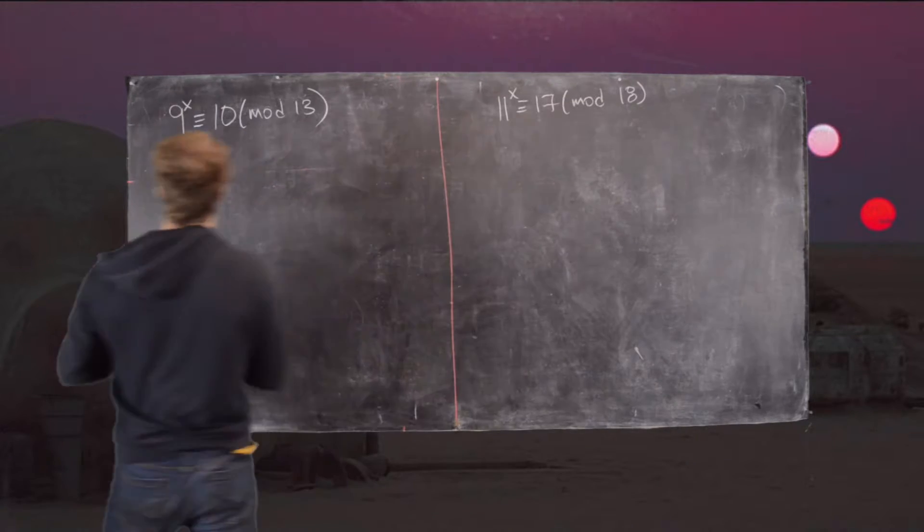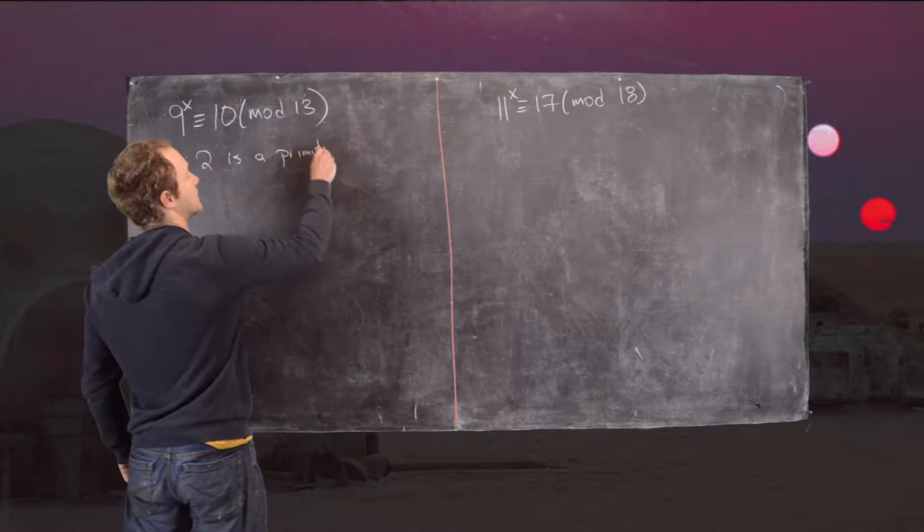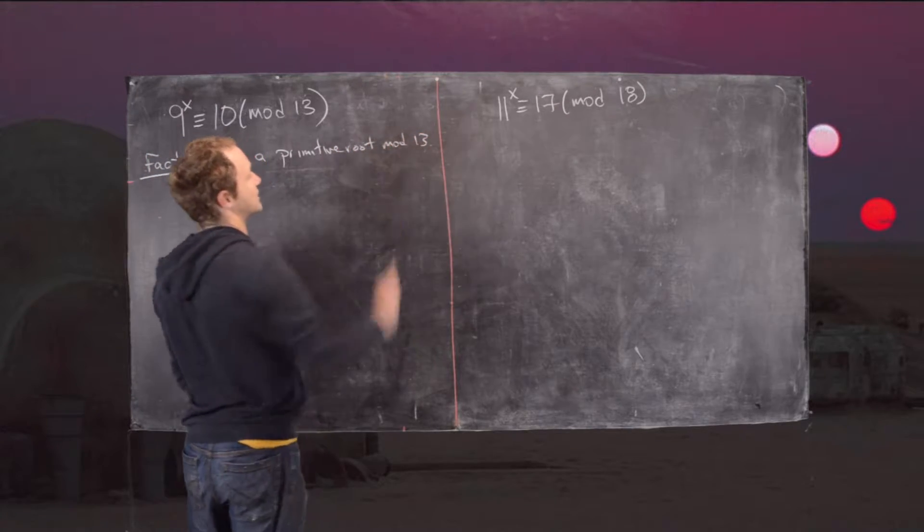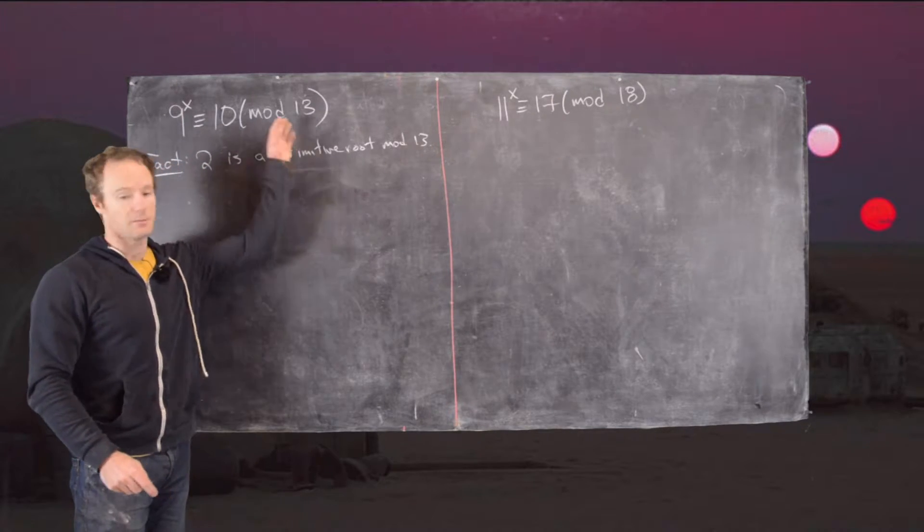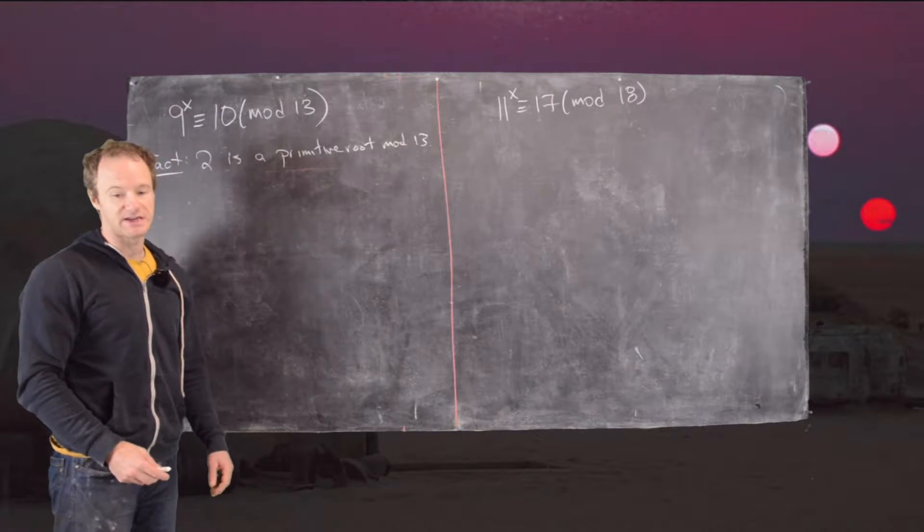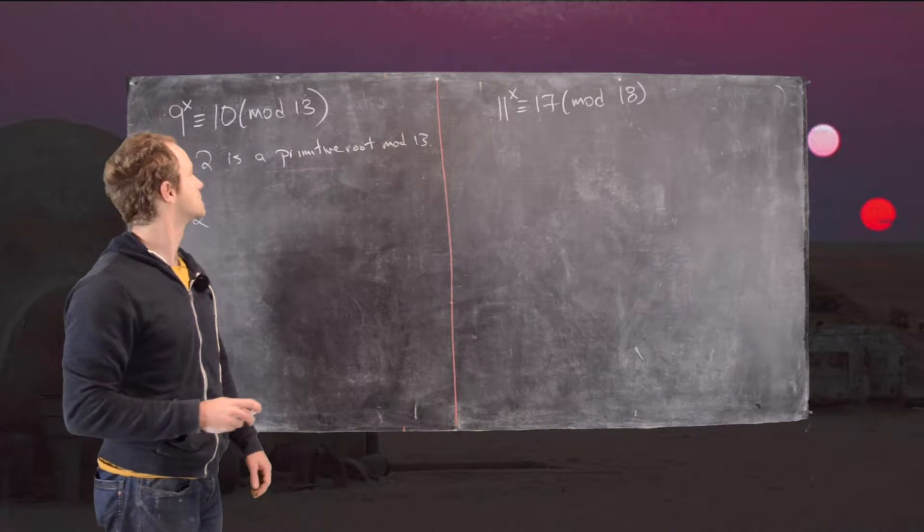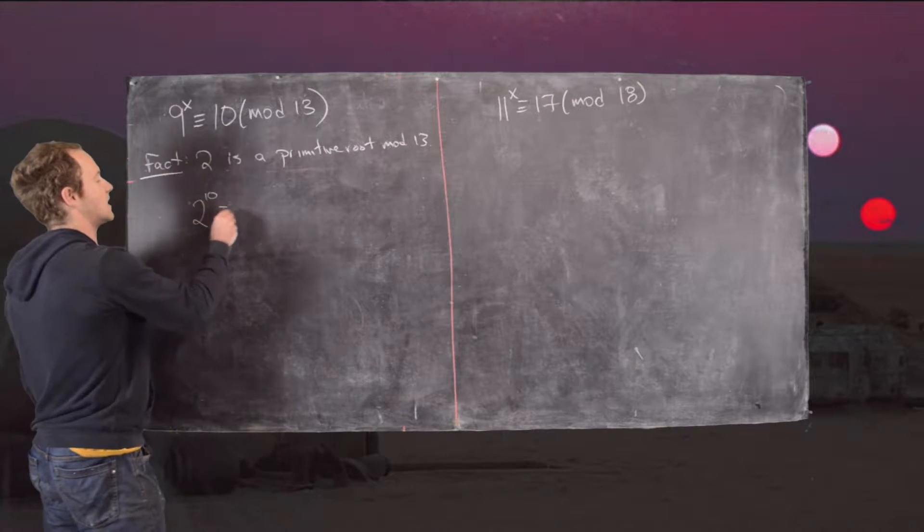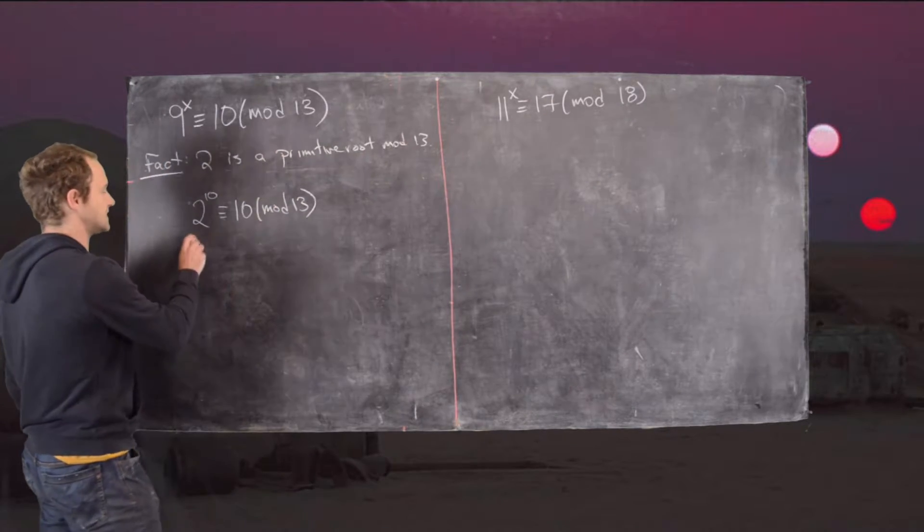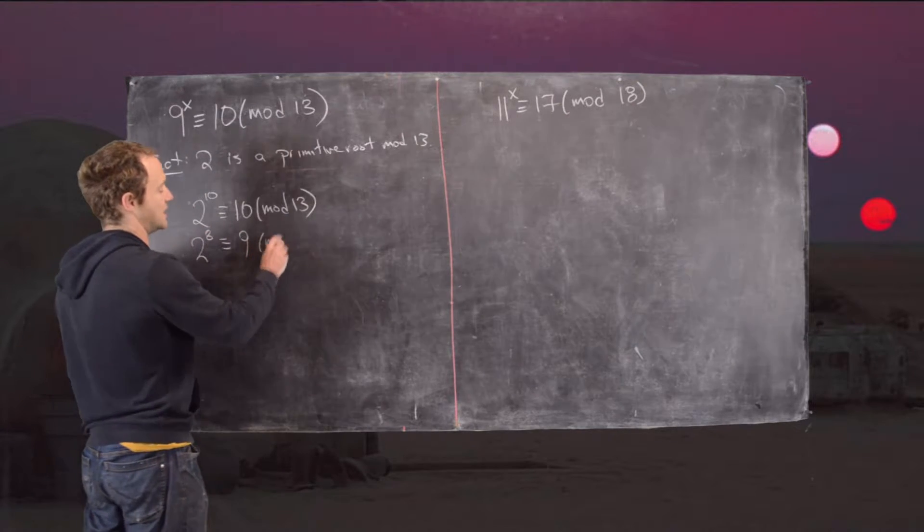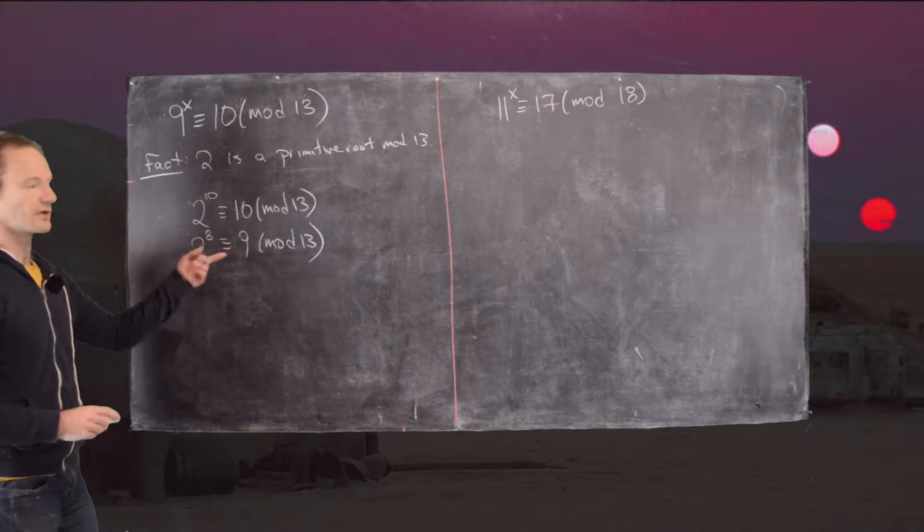In this case we can use the following fact: 2 is a primitive root mod 13. That means we need to write 9 as a power of 2 and we need to write 10 as a power of 2 modulo 13. You can show that 2 to the power 10 is congruent to 10 mod 13 and also 2 to the power 8 is congruent to 9 mod 13.